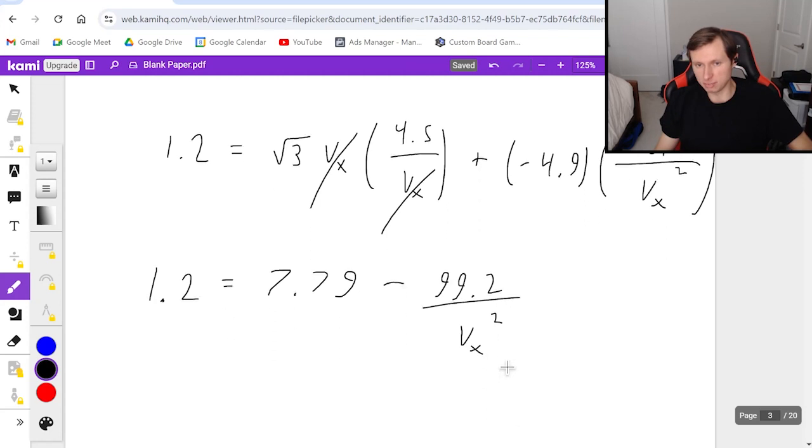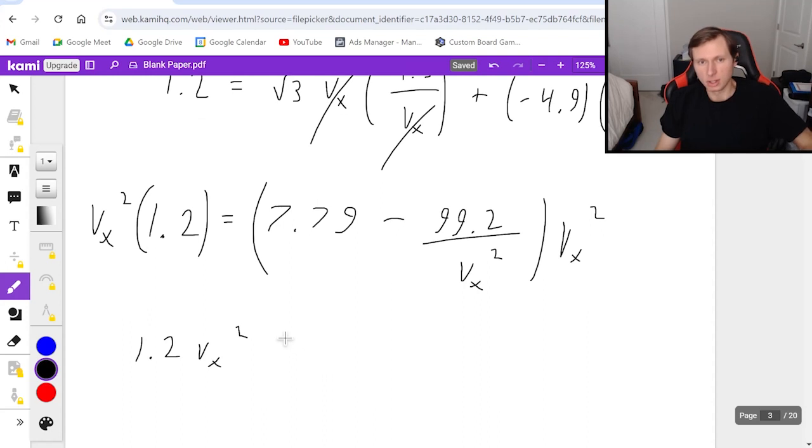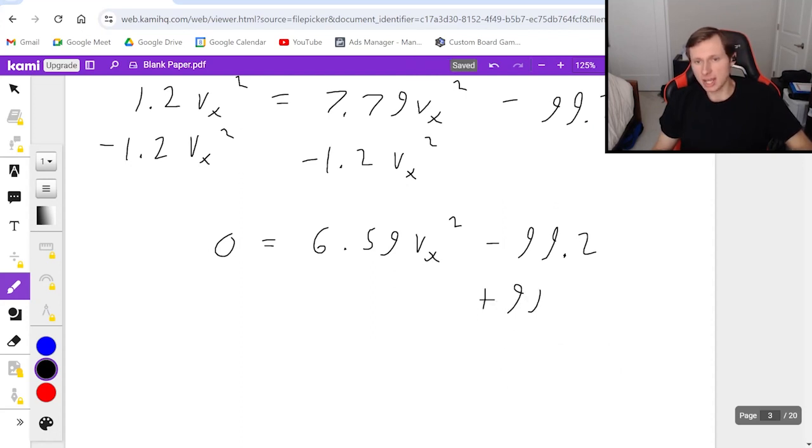Now you may be wondering, how am I going to solve this? So as far as algebra goes, the smartest thing to do would be to multiply both sides by my common denominator, which is v_x squared. So that's going to get me left side 1.2 v_x squared. On the right side, I get 7.79 v_x squared minus 99.2 because the v_x squareds cancel on the last one. So I'll admit that was a little confusing. So if you're confused by this step, don't worry about it too much. Just focus on what we're doing now. And I need to solve for v_x squared. So I will subtract 1.2 v_x squared from both sides, group like terms together. I get 0 equals 6.59 v_x squared minus 99.2. And then the easiest way to solve for v_x is to first add 99.2 to both sides.